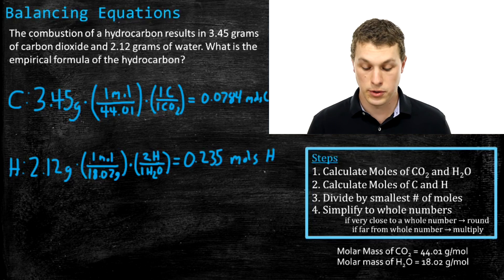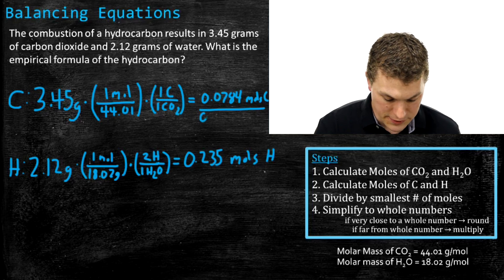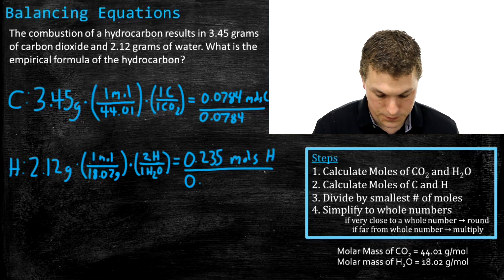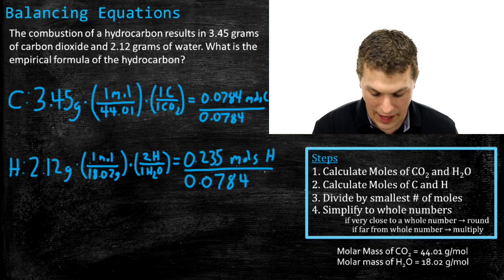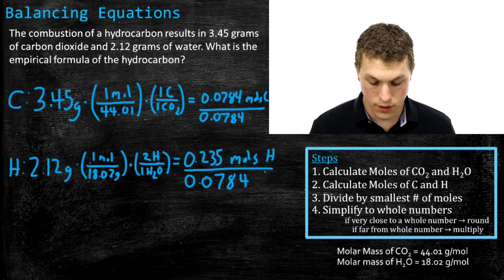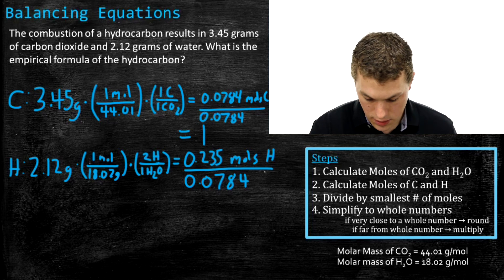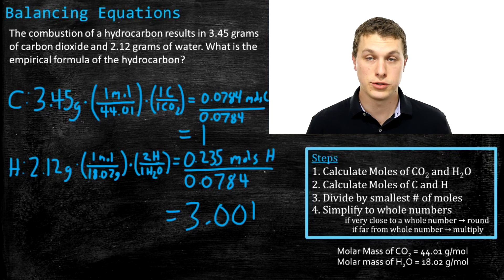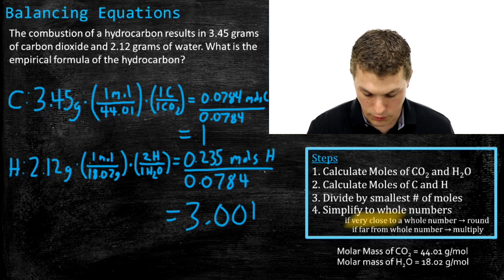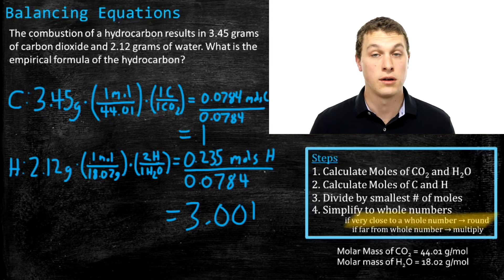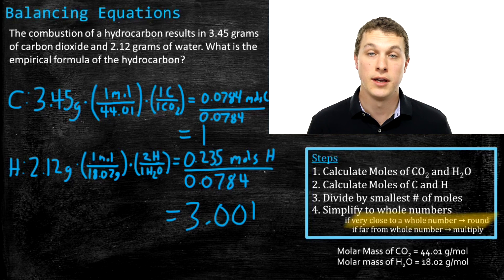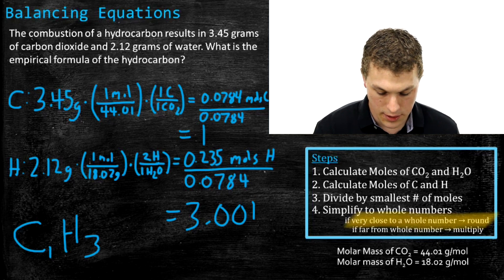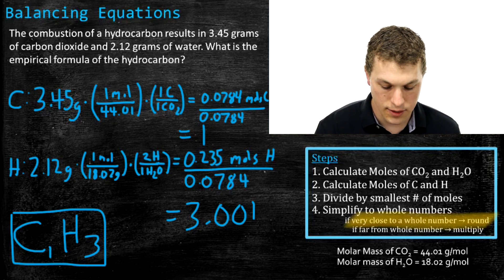The last step is to divide each by the smallest number of moles, which is again carbon at 0.0784. Dividing both: carbon gives us 1, and hydrogen gives us 3.001. Both are very close to whole numbers, so we round — 3.001 becomes 3, and we assume any deviation is experimental error. That means we have 1 carbon for every 3 hydrogens, so our empirical formula for that hydrocarbon is CH3.